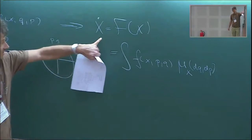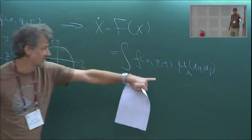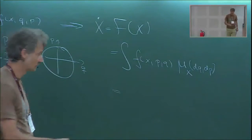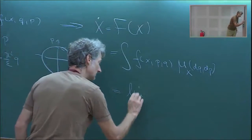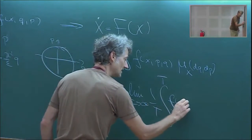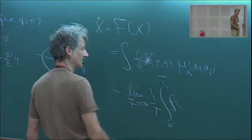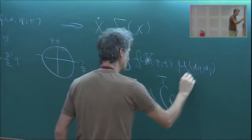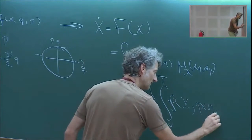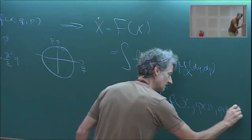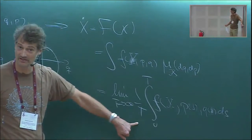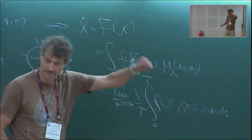We can still make sense of this equation by invoking Birkhoff's ergodic theorem and saying we just evaluate this as a time average — the time average as T→∞ of f(X, p(s), q(s)) ds. So even if we don't know the invariant measure, we can estimate it through the time average if we're given a time trajectory.